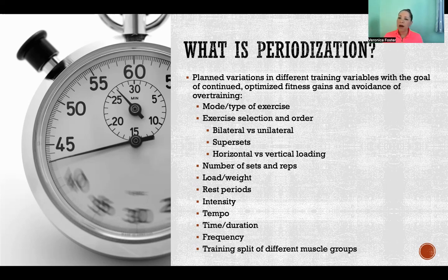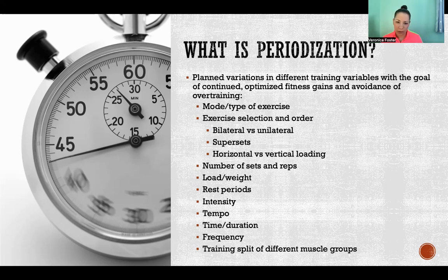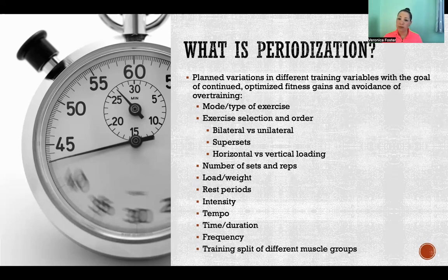We introduce lots of different variations across many variables over the course of the training program to help you continue to develop and gain physiologically — getting stronger, building endurance, whatever you're trying to do — without reaching a plateau. And at the same time, to avoid overtraining. If we do too much of the same thing for too long, we will overtrain, so it's important that we have a lot of variety.